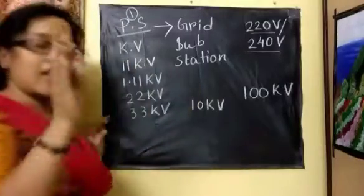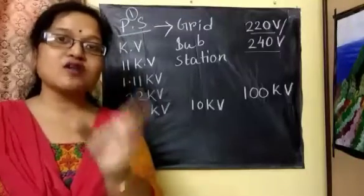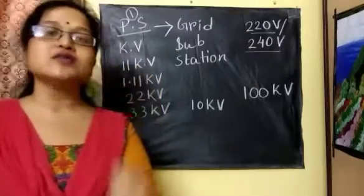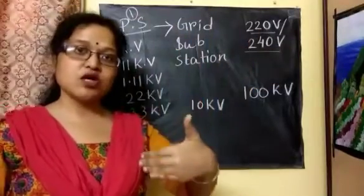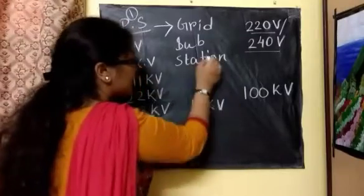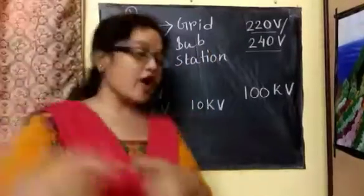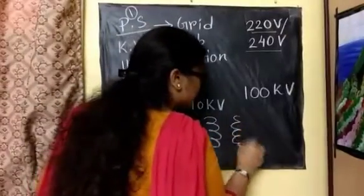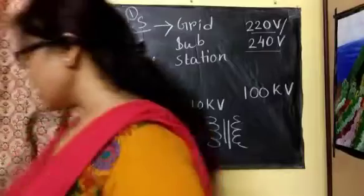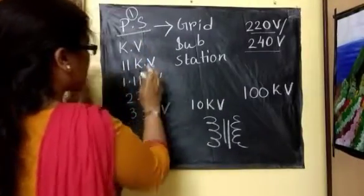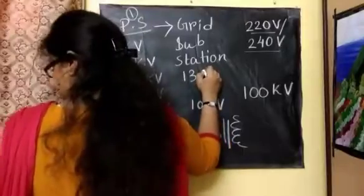A transformer always steps up or steps down the alternating current — meaning it steps up or steps down the voltage. Those who have done motor projects will know that a transformer is present in a motor. In the grid substation, we have a step-up transformer. The grid means the coil structure. In the grid substation, the step-up transformer converts 11 kilo volt, 20 kilo volt, or 30 kilo volt to nearly 132 kilo volt.